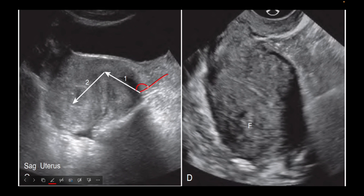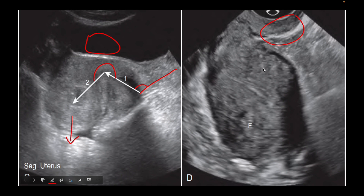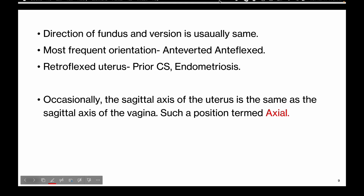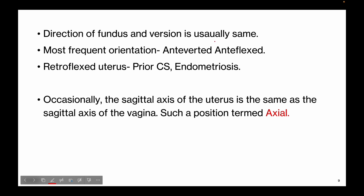Here is another image showing the uterus in transabdominal and transvaginal ultrasound. In the first image, the cervix is making an acute angle with the vagina, so it is anteverted. However, the uterine fundus is making an obtuse angle with the cervix and is facing away from the bladder, hence it is retroflexed. In the second image, the uterine fundus is also facing away from the bladder and making an obtuse angle with the cervix, confirming a retroflexed uterus.